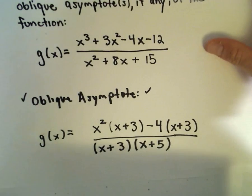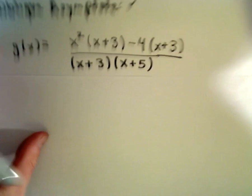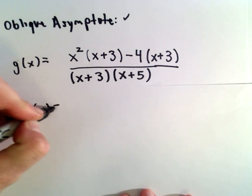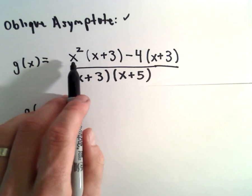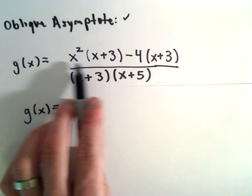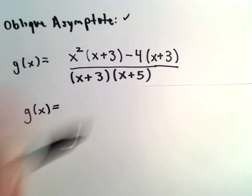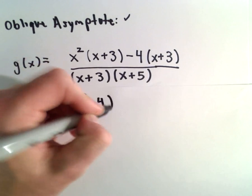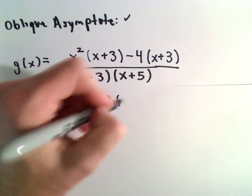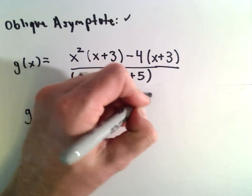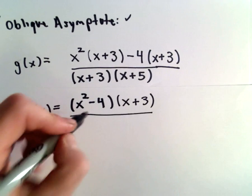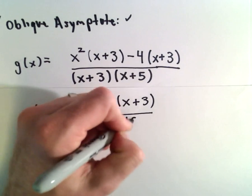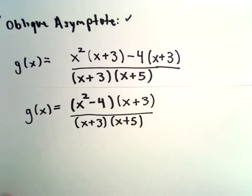Recall that when doing factoring by grouping, what we do now is we take the first factor in each term and put those in one set of parentheses. So x squared minus 4 will go in one set, and then we're left over with x plus 3.